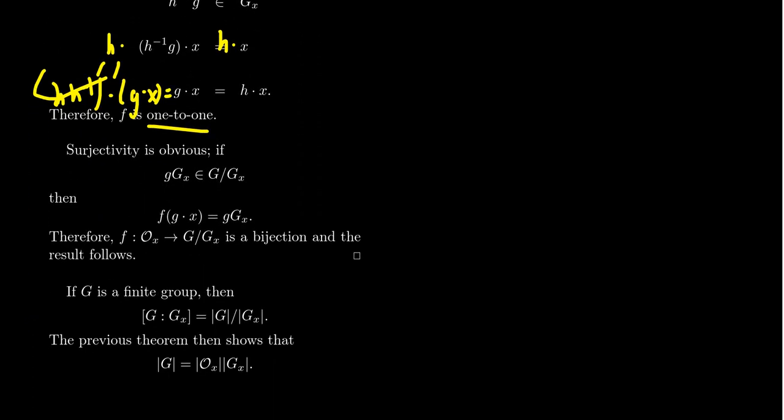We're going to get h h inverse dot g dot x. h h inverse gives the identity which doesn't do anything to the group action. So it simplifies to be g dot x. So g dot x equals h dot x. This shows us that it's one-to-one. You actually see this a lot, that when you define a function and it might be well-defined because of representations, the argument that proves it's well-defined if reversed will show that it's one-to-one. That's not a universal principle, but it shows up enough that it's worth paying attention to.